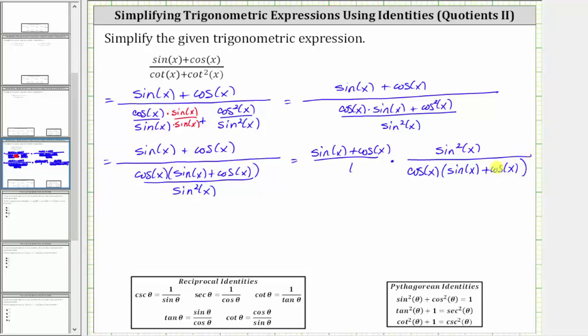And now before multiplying, let's simplify out the common factors between the numerators and denominators. Notice we have a common factor of sine x plus cosine x here and here, and therefore these factors simplify to one. And therefore the product is sine squared x divided by cosine x.